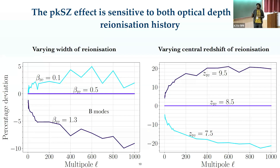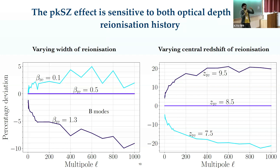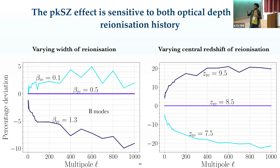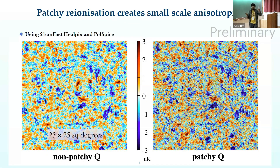This plot shows how the power spectrum varies with the width of reionization, and on the right how it varies with the central redshift. As you slow down reionization — increasing the width — the polarization along the line of sight tends to cancel, giving a smaller amplitude. The reverse happens for faster reionization. Increasing the central redshift pushes reionization further back when the universe was smaller, the electron number density was higher, and the optical depth increases, raising the overall power spectrum.